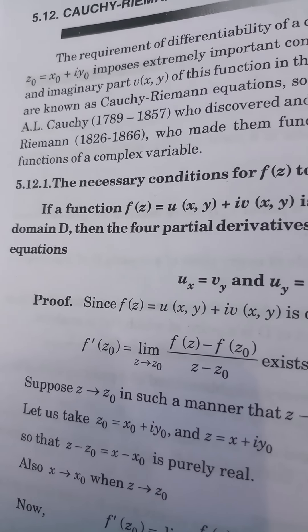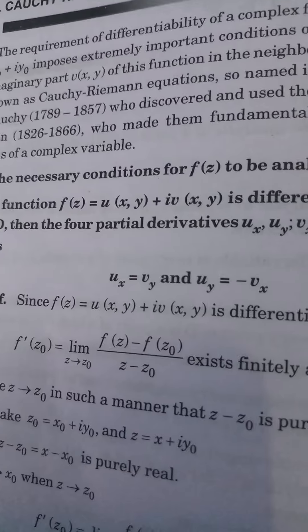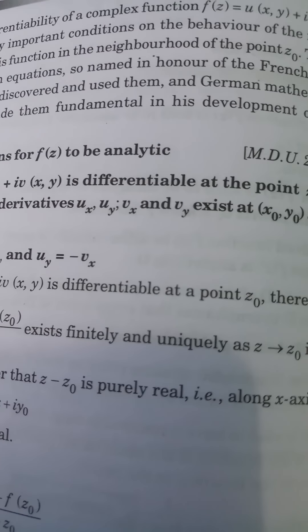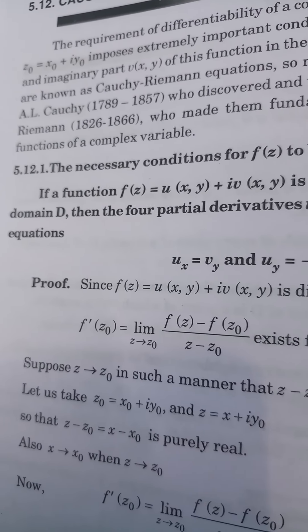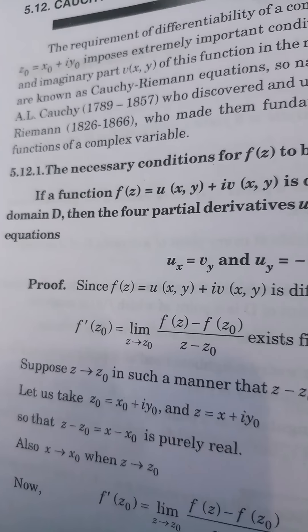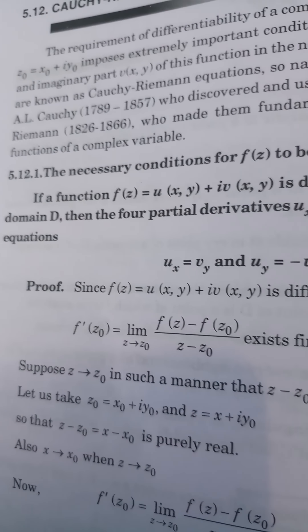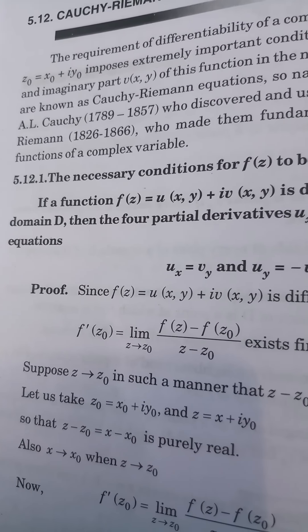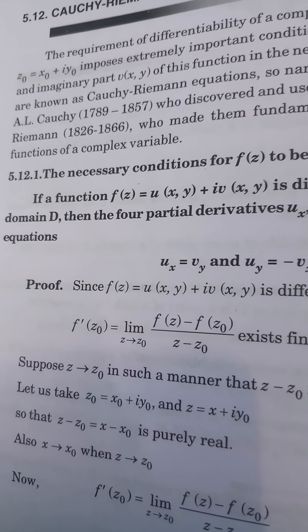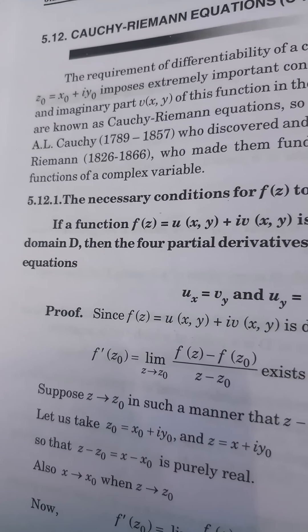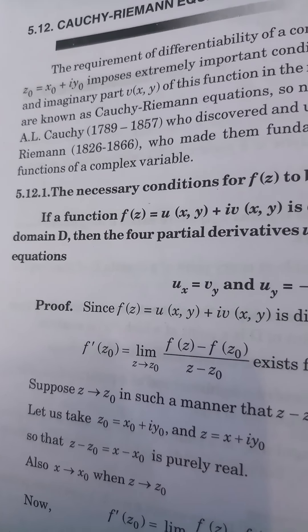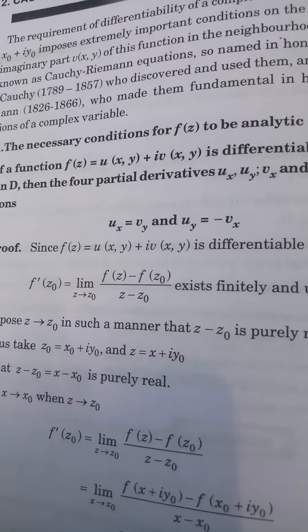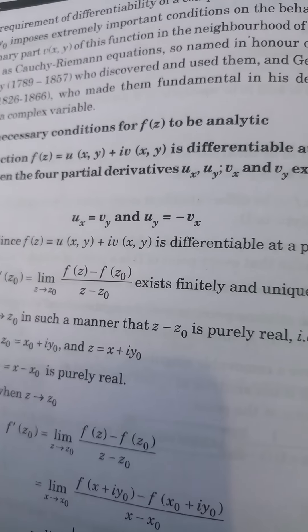And G.F.B. Riemann (1826–1866), who made them fundamental in his development of the theory of functions of a complex variable. The necessary conditions for f(z) to be analytic involve both Cauchy (1789–1857) and Riemann (1826–1866).